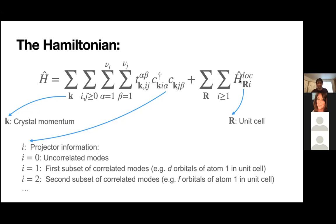For i or j greater than or equal to one, we refer to correlated degrees of freedom — typically open shells of d or f electrons. Note that this is not the most general possible interaction; it is a local kind of interaction. Each term is the most general operator built with creation and annihilation operators labeled r and i, but there is no mixing between ri and r'i'. This is like a Hubbard model as opposed to an extended Hubbard model.